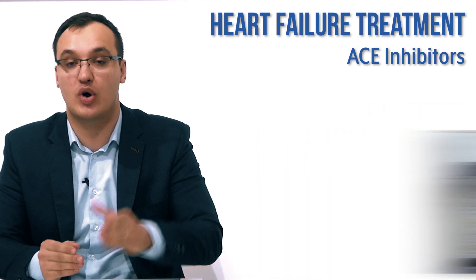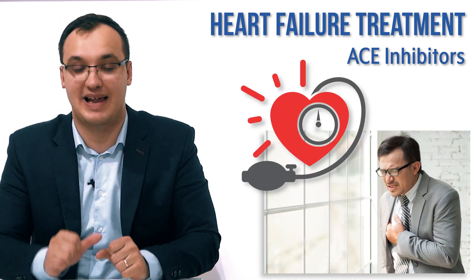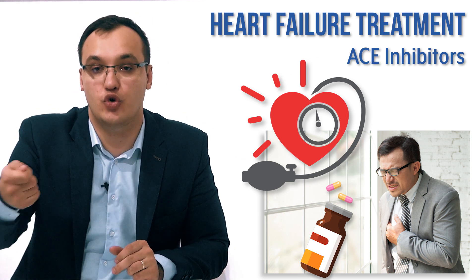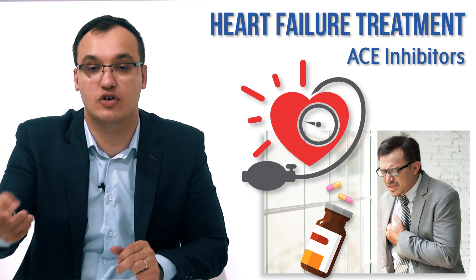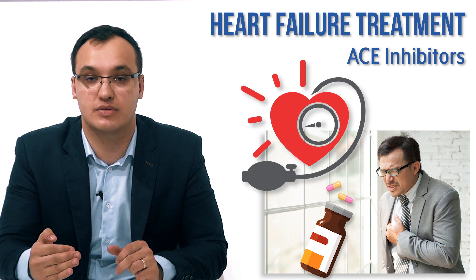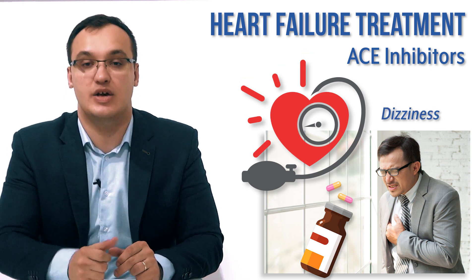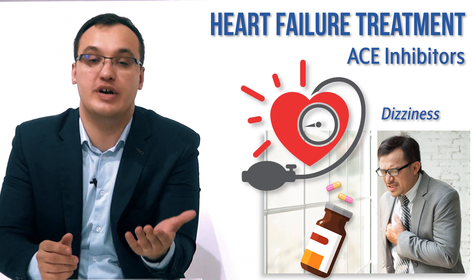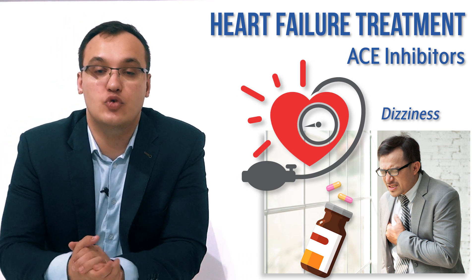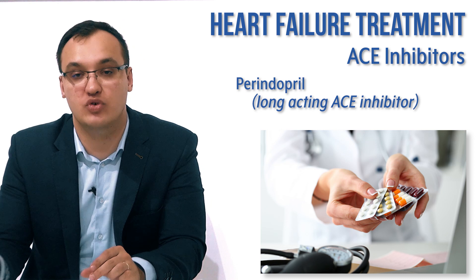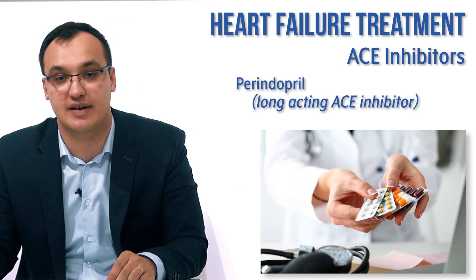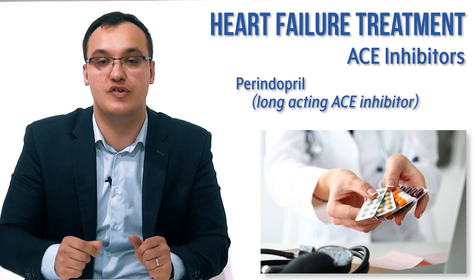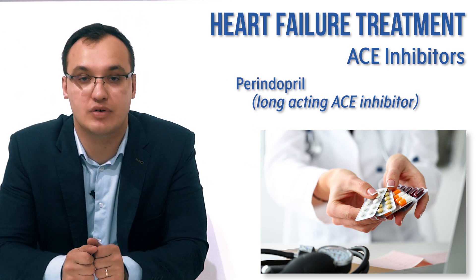For example, if we have a patient who has heart failure with a normal blood pressure and we give ACE inhibitors, which usually reduce blood pressure, then we will get too low a blood pressure and the patient will become dizzy and fall down. Therefore it's very important that you change to perindopril, which is a long-acting ACE inhibitor — it will not cause a big spike or a big drop in blood pressure.